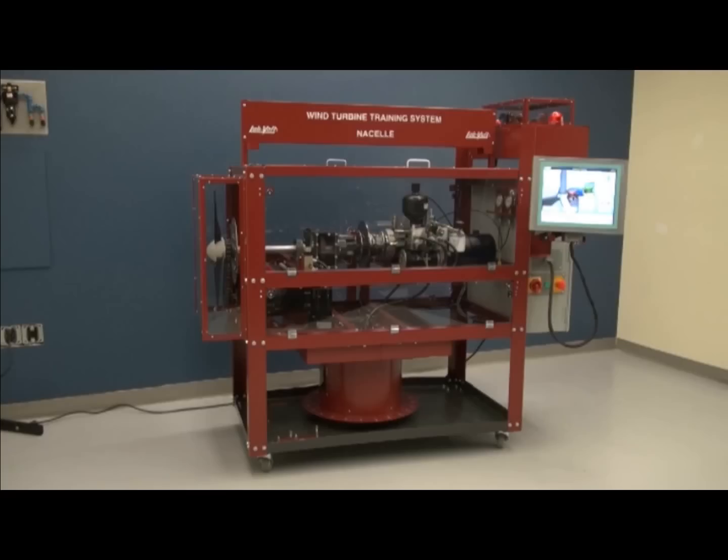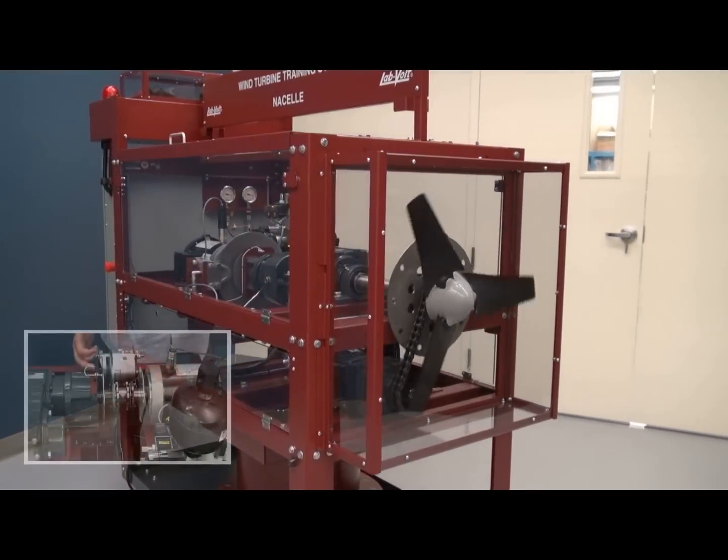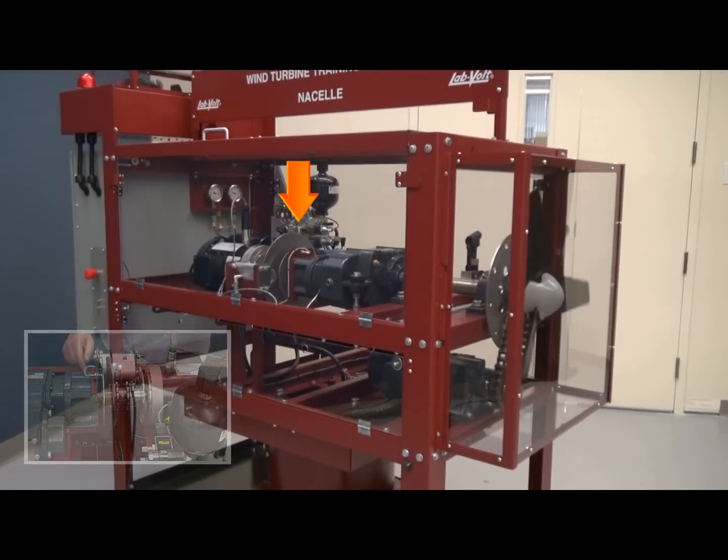Also, we have included a custom hydraulic unit to control the brakes of the nacelle, one of which is located in the yaw system and another in the high-speed side of the drivetrain to activate the turbine brake on the disc.